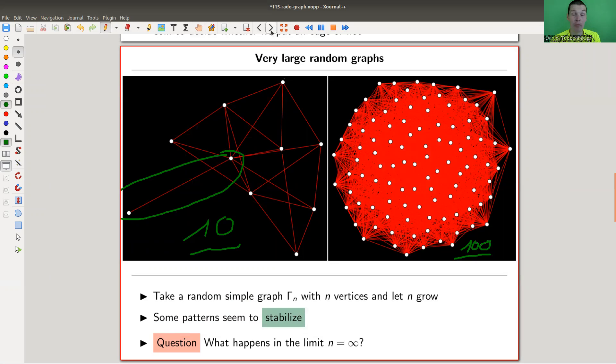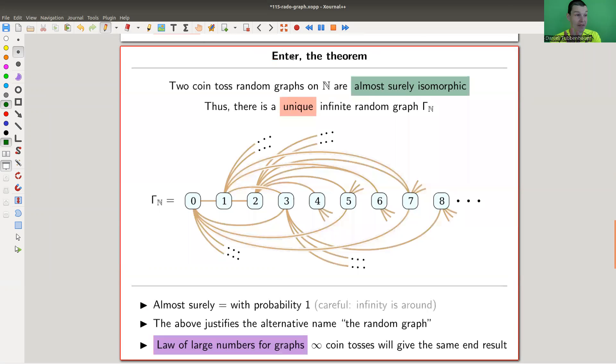And something really funny happens at the limit, n equals infinity, which I found very shocking in the first place. And then if you think about it a little bit, infinity is very scary, and it's really just a law of large numbers. Maybe it's not so surprising anymore. But from the outset, I think it's really surprising. The coin toss graph on n, which is kind of a limit here, is almost surely just one type of graph. So all coin toss graphs are almost surely isomorphic to one type of graph. They're all the same.